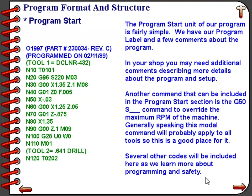Another command that fits in the program start area is the G50S command — a modal command that continues throughout the entire program. This is a good place to put it. If included for only one specific tool, any tool prior to that would not be covered by the G50S command. Therefore, the beginning of the program is the best place for G50S so it overrides the maximum RPM for the entire run.